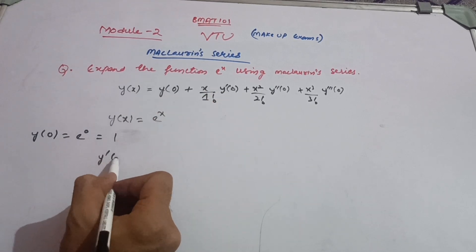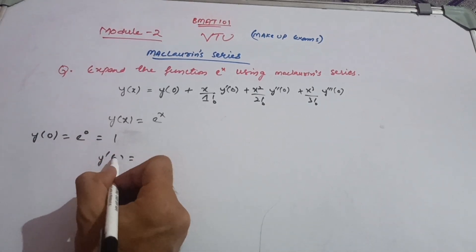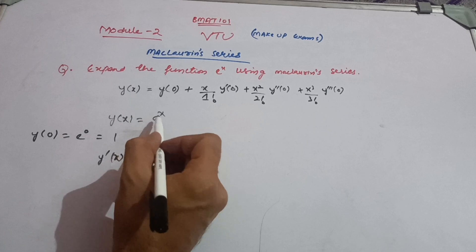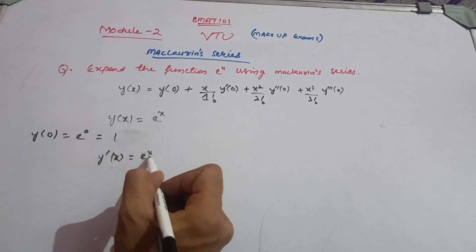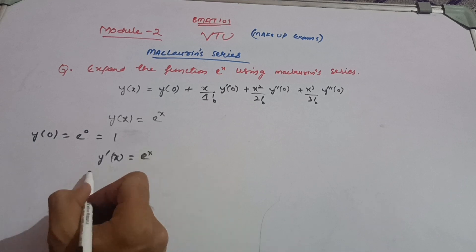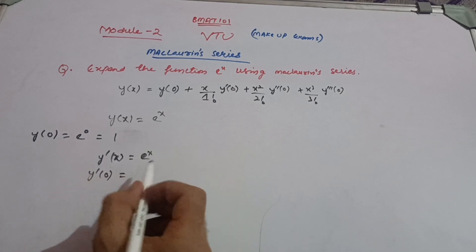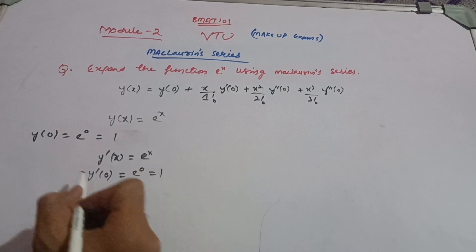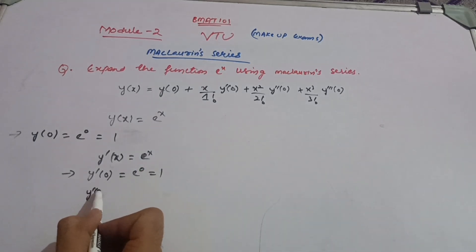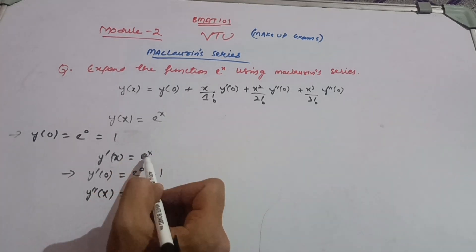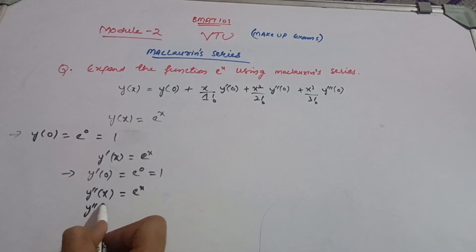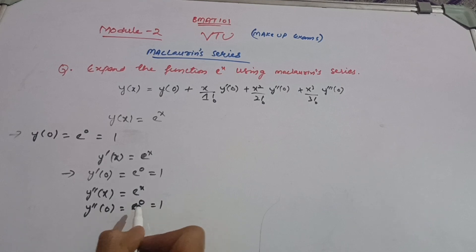Next, calculate y'(0). First write y'(x) by differentiating the function. The differentiation of e^x is always e^x — you must remember this. Then calculate y'(0) = e^0 = 1. Similarly, for y''(0), differentiate again: y''(x) = e^x, and y''(0) = e^0 = 1. For e^x, every derivative evaluated at 0 gives 1.